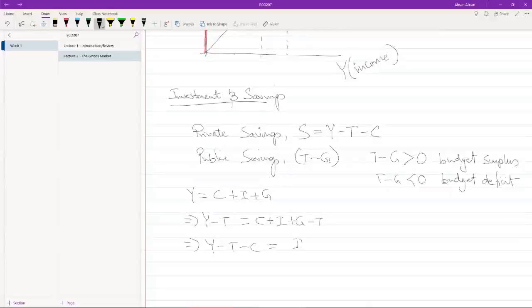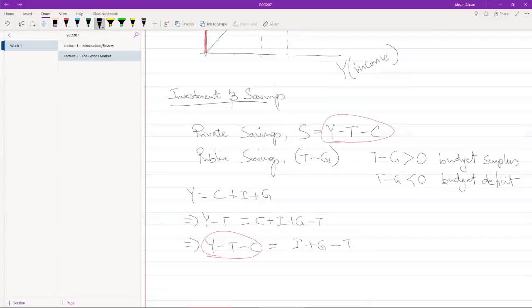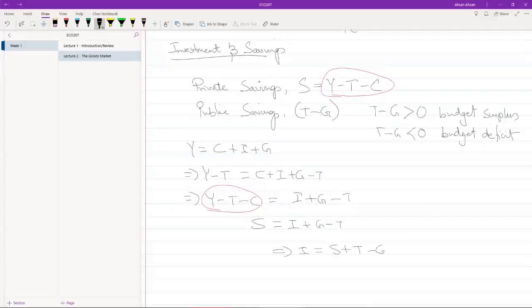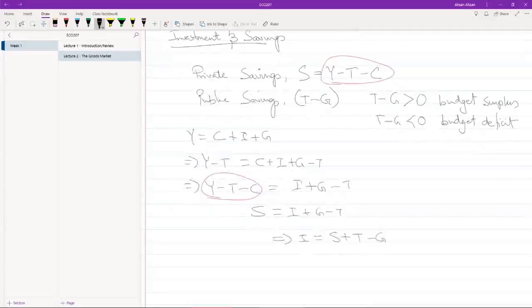I'm going to take C to the other side so I get Y minus T minus C equals I plus G minus T. Now look at this: Y minus T minus C, which is equal to this. So what I can write is that S is equal to I plus G minus T. Or if I simplify this a little bit more, what I can write is that I is equal to S plus T minus G.